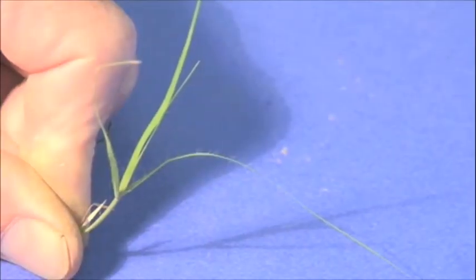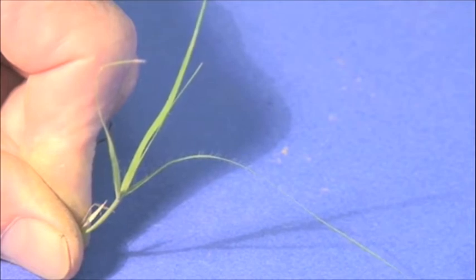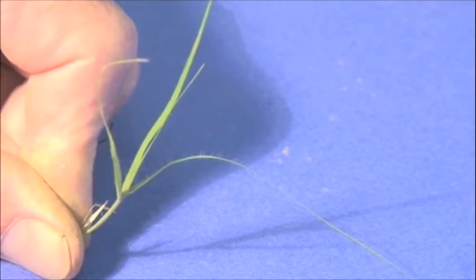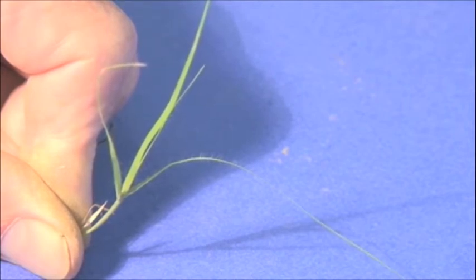So one of the other really distinctive characteristics with buffalo grass is the presence of hair on the leaf blade, both on the upper portion of the leaf blade and on the underside of the leaf blade. The narrow leaf texture, the stolons, the type of seed head, and then also the presence of the hair on the upper leaf blade and on the lower side of the leaf blade are very characteristic of buffalo.